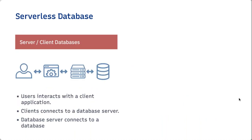In a client-server database system, the user interacts with a client application, which communicates to a database server hosted on the same machine or a different machine via a network. The database server then connects to the database and returns your data. It involves a two-tier architecture requiring an established connection between client and server, which means you need network connectivity, authentication, and other security considerations — getting complicated for many simple use cases.